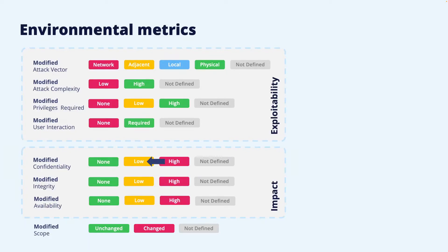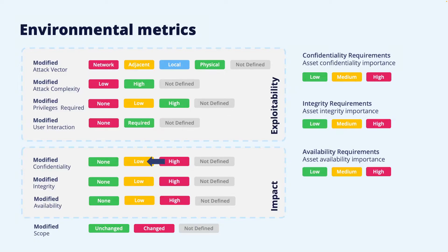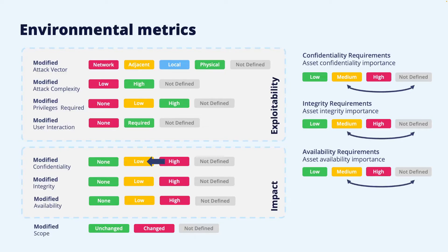The second type of customization is to add requirements for the impact metrics — that is, confidentiality, integrity, and availability requirements. This should reflect how important these metrics are for the vulnerable component in the user's environment. If the data handled by the component is considered public data, there will probably be low requirements for confidentiality, and an exploit with high confidentiality impact would not affect the organization to a large extent anyway. The base score does not take into consideration what type of data is handled by the vulnerable component. The requirements can be set to low, medium, or high, and there is also a not-defined alternative. The choice adds a scaling factor to the corresponding impact base scores, or the modified base score if it has been modified. Not-defined has the same effect as medium — that is, no scaling factor is added.